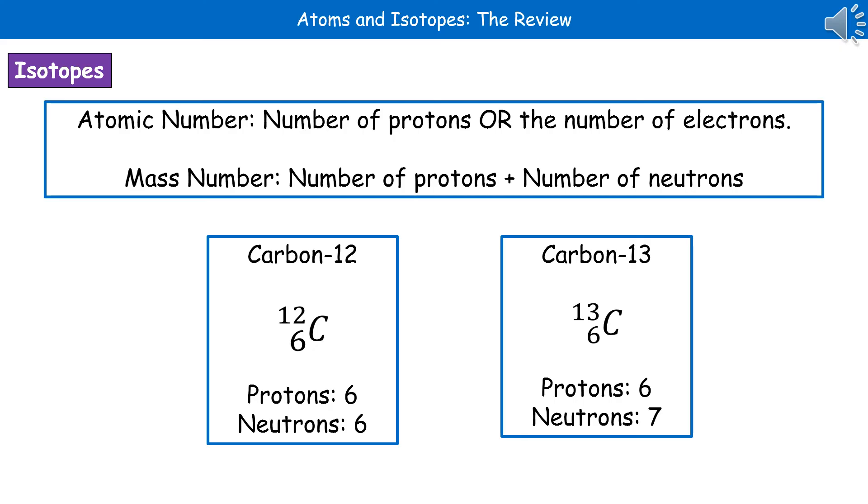So just to recap on those two very important parts of information that we get in any box on the periodic table. Your atomic number is the number of protons or the number of electrons. It's the same. And the mass number is the number of protons plus the number of neutrons. So if ever you want to work out your number of neutrons, it's the mass number minus the atomic number.